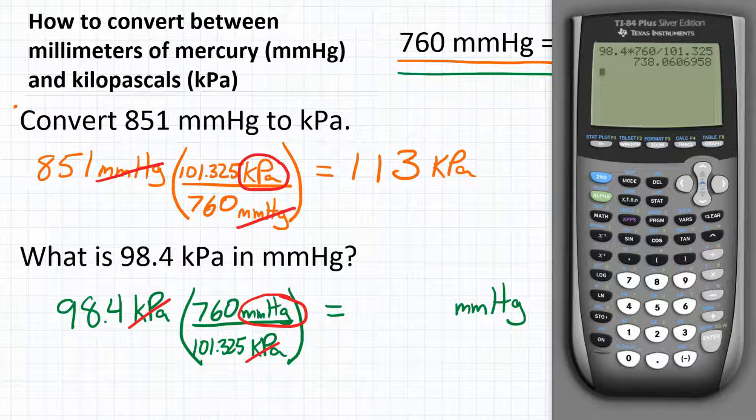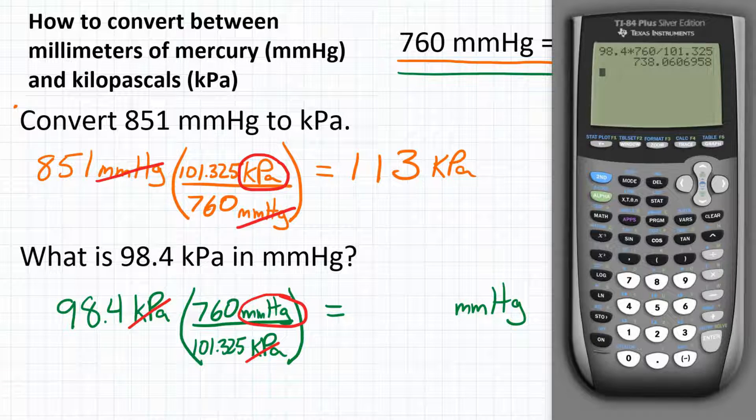Hit equals, and this is what our calculator gives us. Let's round that to three significant digits, so we would get 738.